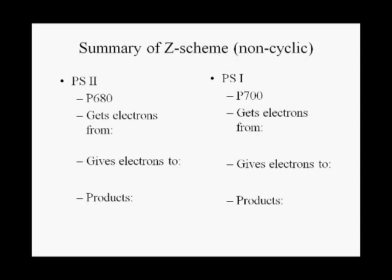Here is our summary of non-cyclic electron flow. We have two photosystems, and these two photosystems do different things. Photosystem 2 gets its electrons from water and gives its electrons to the electron transport chain. The main products of photosystem 2 are oxygen gas and ATP through chemiosmotic ATP synthesis. Photosystem 1 gets its electrons from the electron transport chain — it is at the end of the electron transport chain — and gives its electrons ultimately to NADP+ to make NADPH.